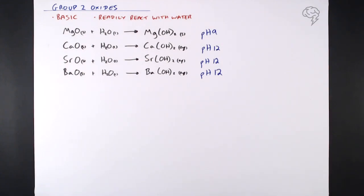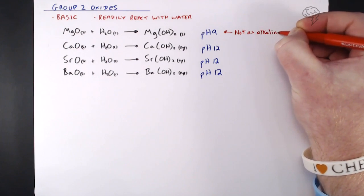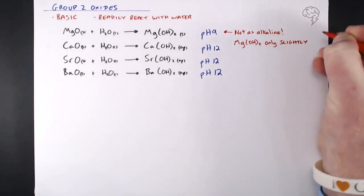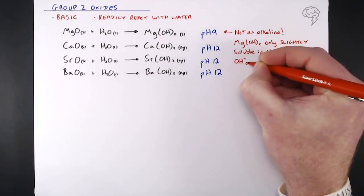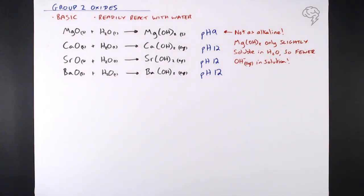The reason magnesium hydroxide is not as alkaline as the other products is that it is only slightly soluble in water. That means there are fewer hydroxide ions in solution, so it's not going to be as alkaline. Calcium, strontium, and barium hydroxide are all very soluble — increasing in solubility down the group — they release all those hydroxide ions, giving a higher pH. That's a likely exam question: why do you only get pH 9 with magnesium hydroxide? It's down to its solubility.